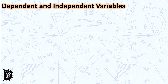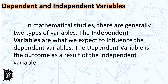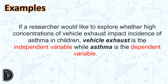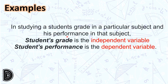Dependent and Independent Variables. In mathematical studies, there are generally two types of variables. The independent variables are what we expect to influence the dependent variables. The dependent variable is the outcome as a result of the independent variable. For example, if a researcher would like to explore whether high concentrations of vehicle exhausts impact incidence of asthma in children, the vehicle exhaust is the independent variable while asthma is the dependent variable. In studying a student's grade in a particular subject and his performance in that subject, the student's grade is the independent variable while the student's performance is the dependent variable.